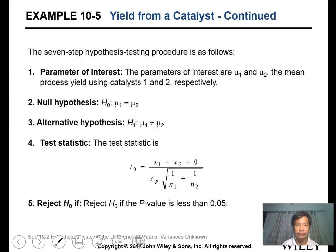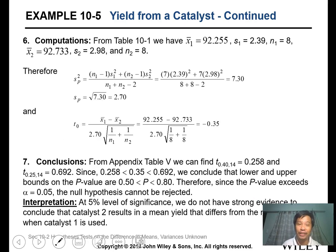We follow the seven-step procedure of hypothesis testing. The parameter of interest is μ1 and μ2 for catalyst 1 and 2. The null hypothesis is that these two catalysts are the same. The alternative is they're not the same. The test statistic is t-test. We reject H0 when the p-value is less than 0.05. First, we get the data and calculate sp using the formula, so it's 7.32 - that's the variance sp squared. Your standard deviation is 2.70.